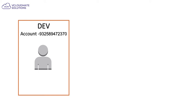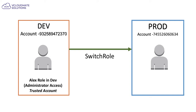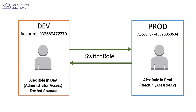Assume that we have a development account — the number series is one of my accounts, which is the development account — where I will be creating a user called Alex. As part of the development account, he would have administrator access, which is called the trusted account. On the other side, I'll have a production account, and I want Alex to log in from the development account using the concept of switch role so that Alex can assume a role in production with read-only access to EC2 instances.